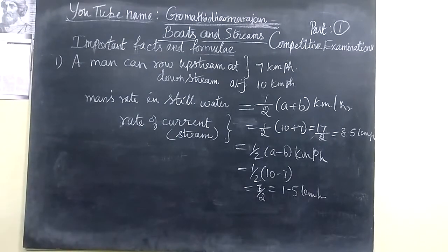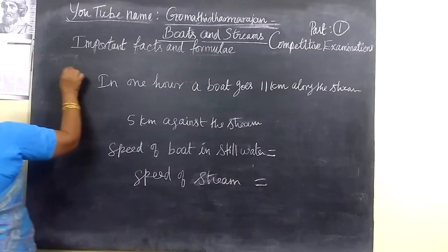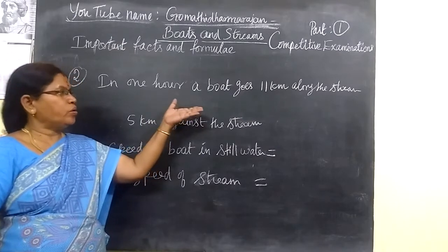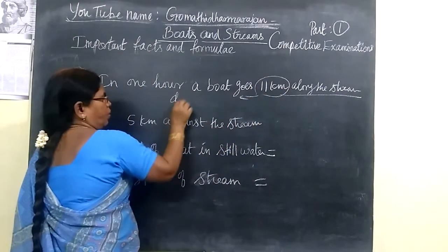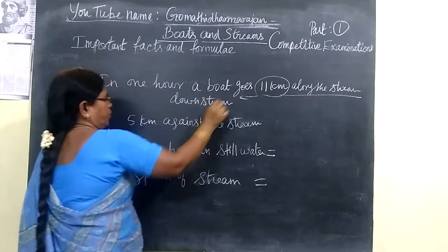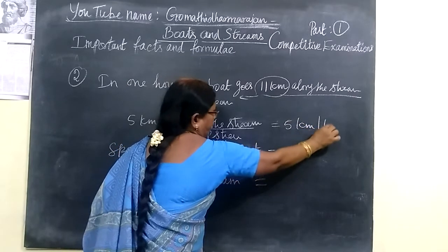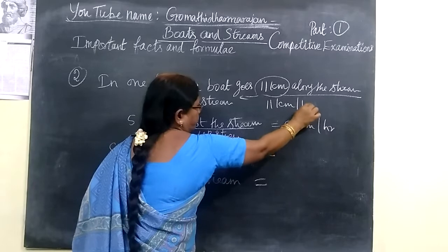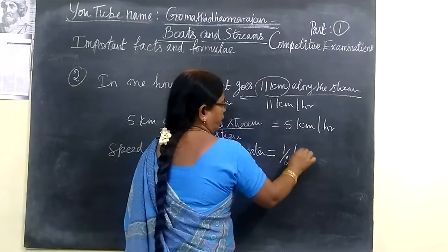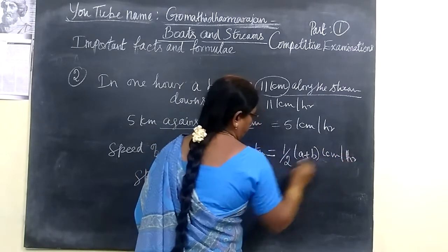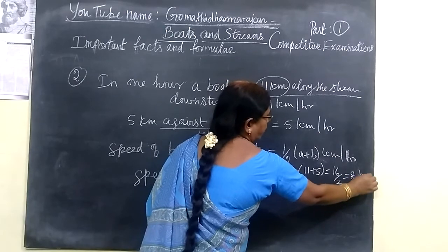Now we see one more example. A boat goes 11 kilometers along the stream — that is downstream — and 5 kilometers against the stream — that is upstream. You have to find the speed of the boat in still water. Speed in still water equals half bracket (a plus b). So half of (11 plus 5) equals 16 by 2, equal to 8 kilometers per hour.